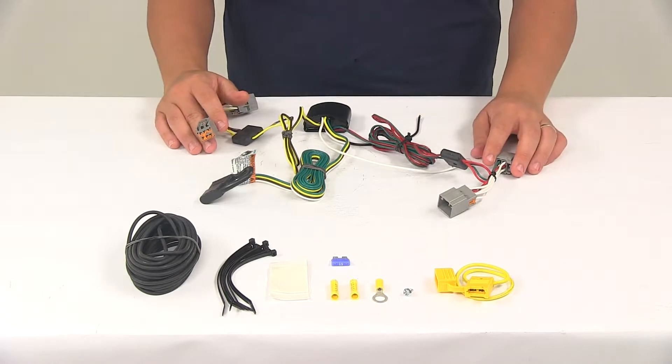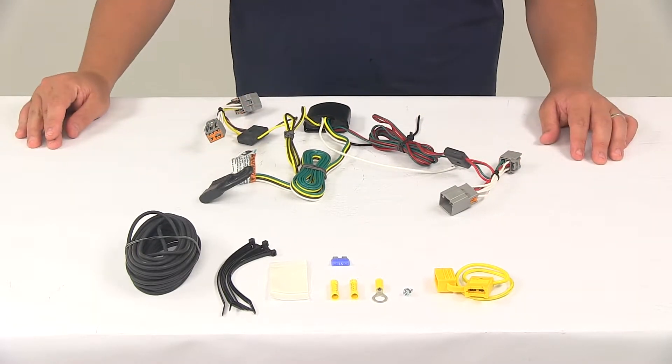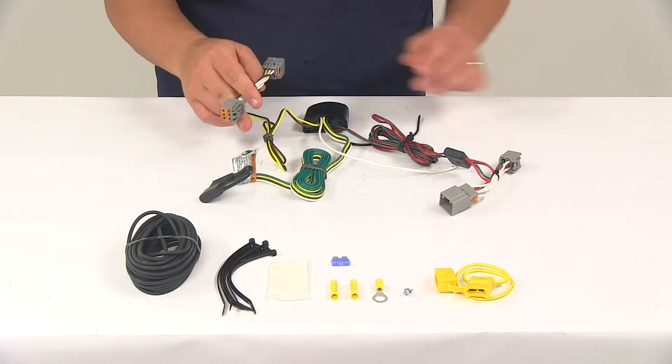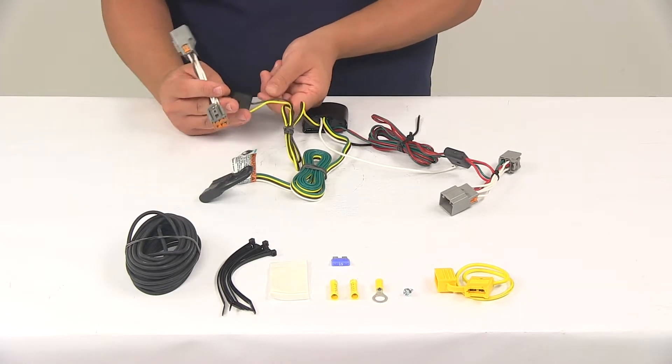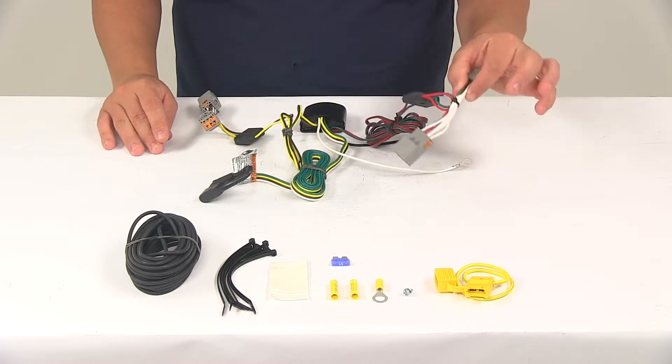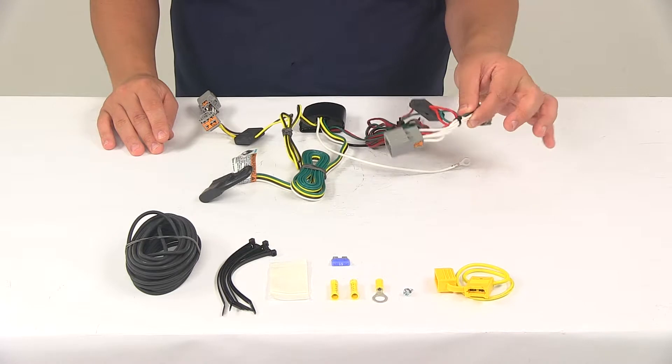Now this is designed to connect quickly and easily. All you need to do is locate the connection points behind the tail lights and plug in your connectors. The connector with the yellow and brown wiring, that's going to go to the driver's side of the vehicle. The connector with the green and red wiring is going to go to the passenger side.